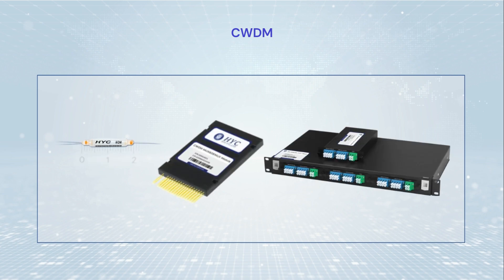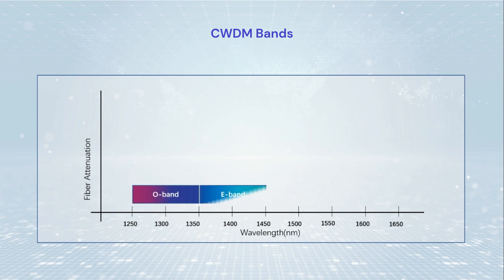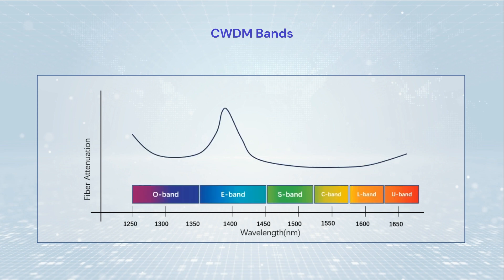CWDM stands for coarse wavelength division multiplexing, and the term coarse refers to the wavelength spacing between channels. CWDM covers O, E, S, C, and L bands of single-mode optical fiber systems.